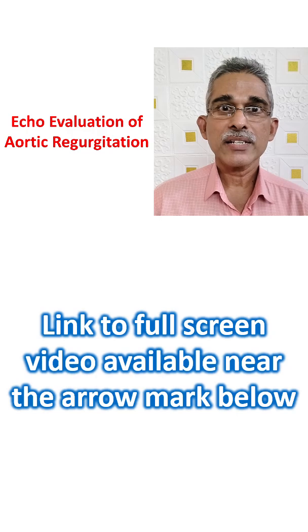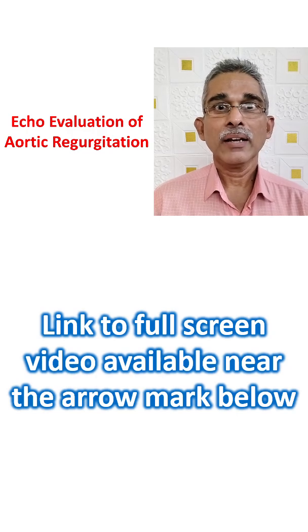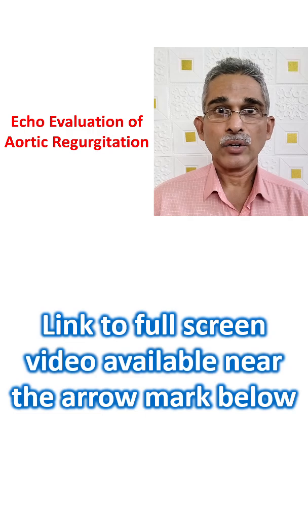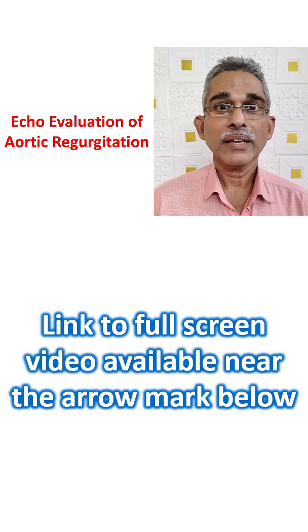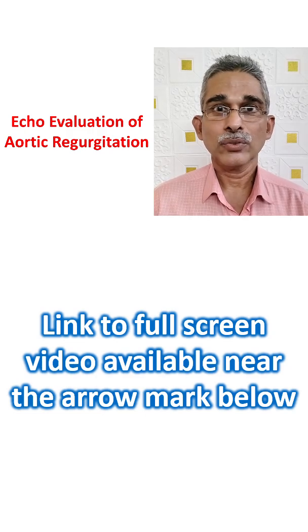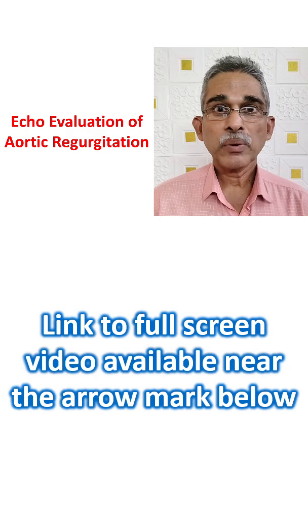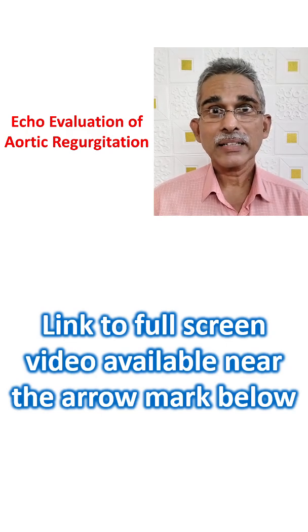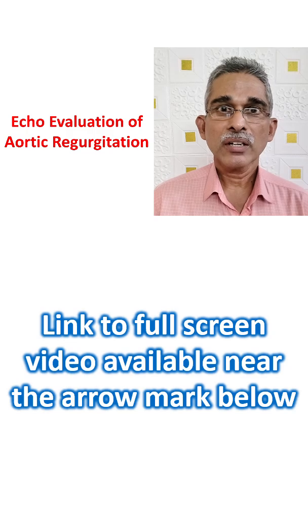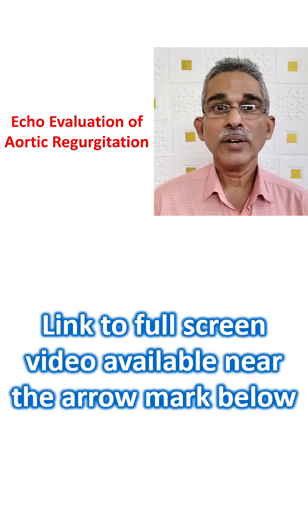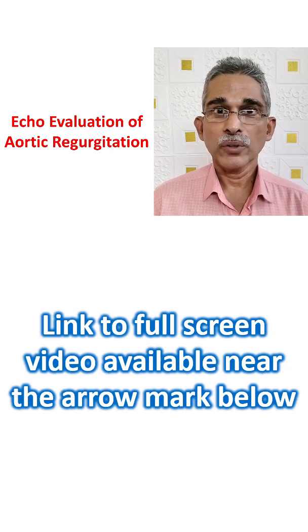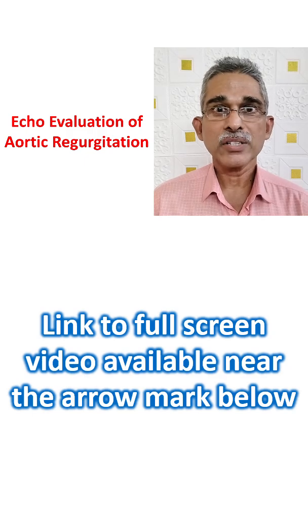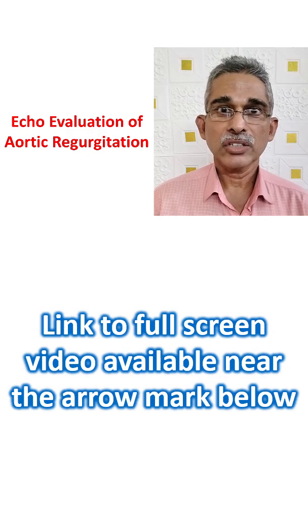Though aortic regurgitation can be evaluated well in the first view obtained in adult echocardiography, usually the parasternal long axis view, multiple views are desirable because an eccentric jet of aortic regurgitation may not be seen to the full extent in a single view. That is why we need multiple views for evaluation of aortic regurgitation.